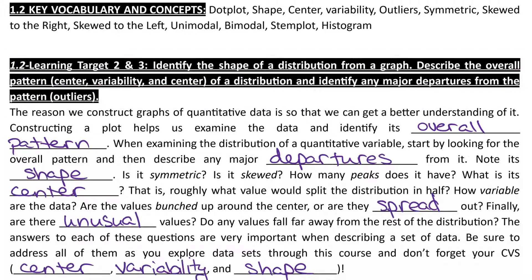When we're looking at a distribution, this could be any type of graph of quantitative data. We're first going to look at its overall pattern. Then, we're going to focus in what are the major departures from this pattern. In general, we are going to consider three main features: center, variability, and shape.